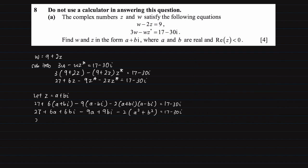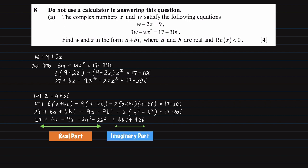Moving on we will have 27 + 6a - 9a - 2a² - 2b². Now I have actually grouped all the real part of the complex numbers on this side, and plus 6bi + 9bi equals 17 minus 30i.